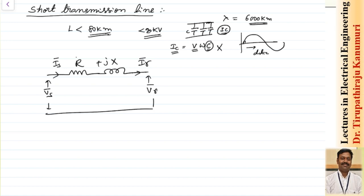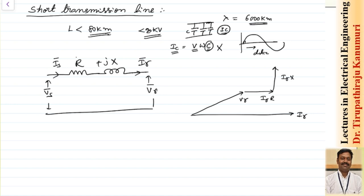We can draw the phasor diagram taking the receiving end current Ir as the reference vector. From that, Vr is calculated, and to Vr we add Ir·R and Ir·jX to get the sending end voltage Vs. The angle at the sending end is called the sending end power factor angle theta_s, and at the receiving end it is phi_r.